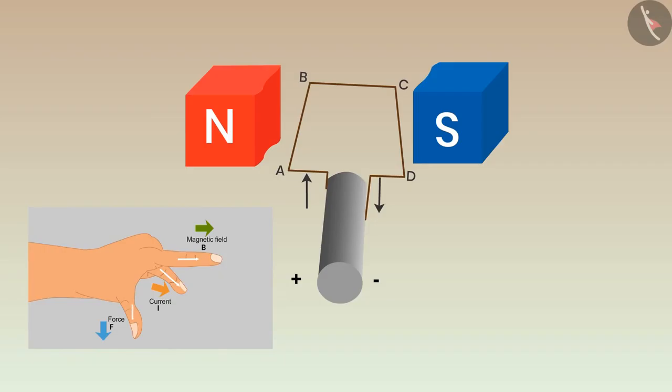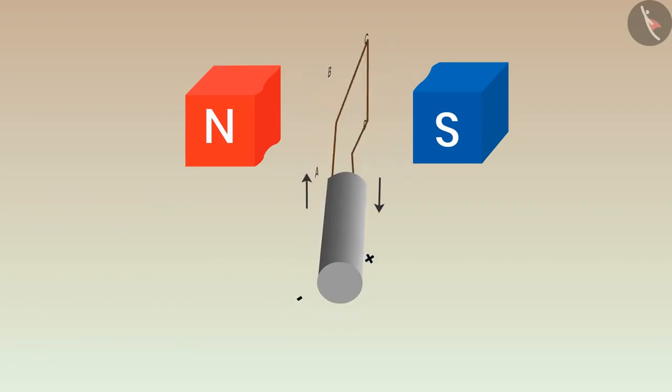What will happen if we apply the same rule on the arm CD of the coil? The current is flowing in the outward direction on CD, then the force will be exerted in the upwards direction. Due to force acting on both the arms of the coil, it starts rotating. After half cycle, AB and CD will interchange their positions and the direction of current would also get changed in both the arms.